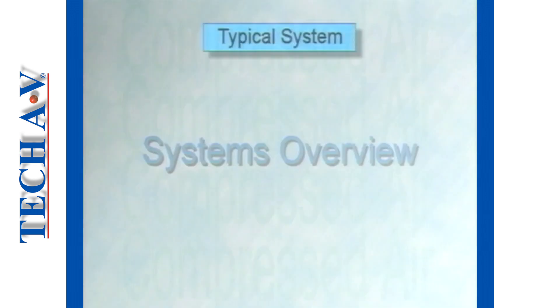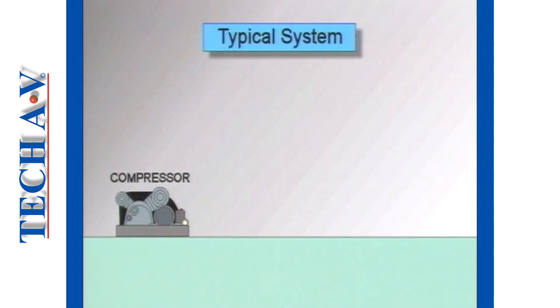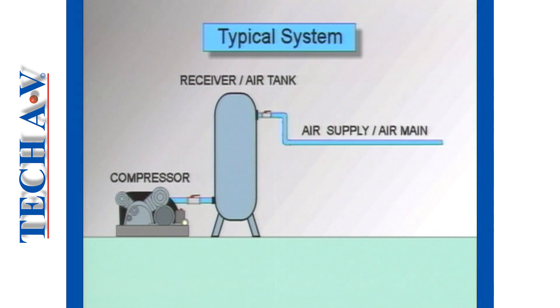Typically, an industrial air system consists of the following major units: a compressor, an air tank or receiver, and air lines and connections.